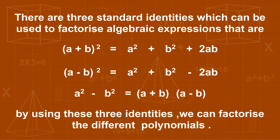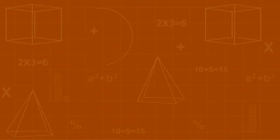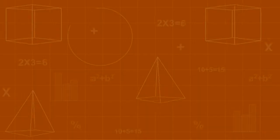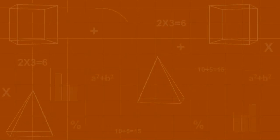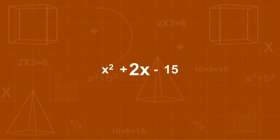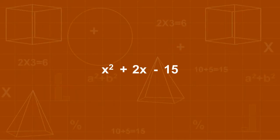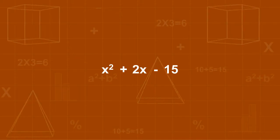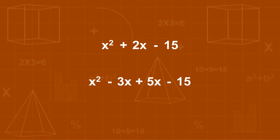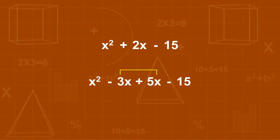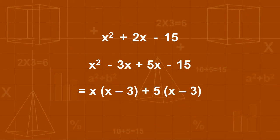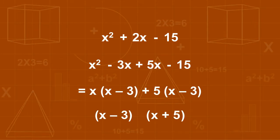By using these 3 identities we can factorize different polynomials. Apart from this, there is another method: factorization by splitting the middle term of a trinomial. For polynomials that are not perfect squares, we use the method of splitting. For example, factorize x² + 2x − 15. The coefficient of the middle term is 2, so we split 2 into two parts whose sum is 2 and product is −15. Since 5 and 3 are factors of 15 such that 5 − 3 = 2, the factors are (x − 3)(x + 5).